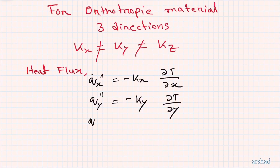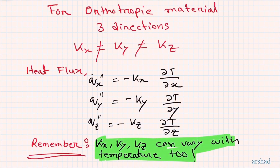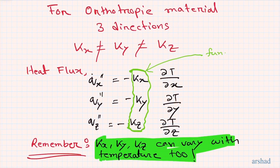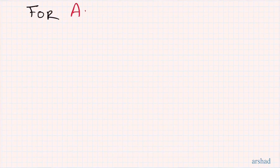For an orthotropic material, the heat flux equations in each direction are: Q''_x = −K_x (∂T/∂x), and similarly for Y and Z with their respective K values and temperature gradients. Since thermal conductivity also varies with temperature, K_x, K_y, and K_z are each functions of temperature, and the equations should be written as Q''_x = −K_x(T)(∂T/∂x), and so on.